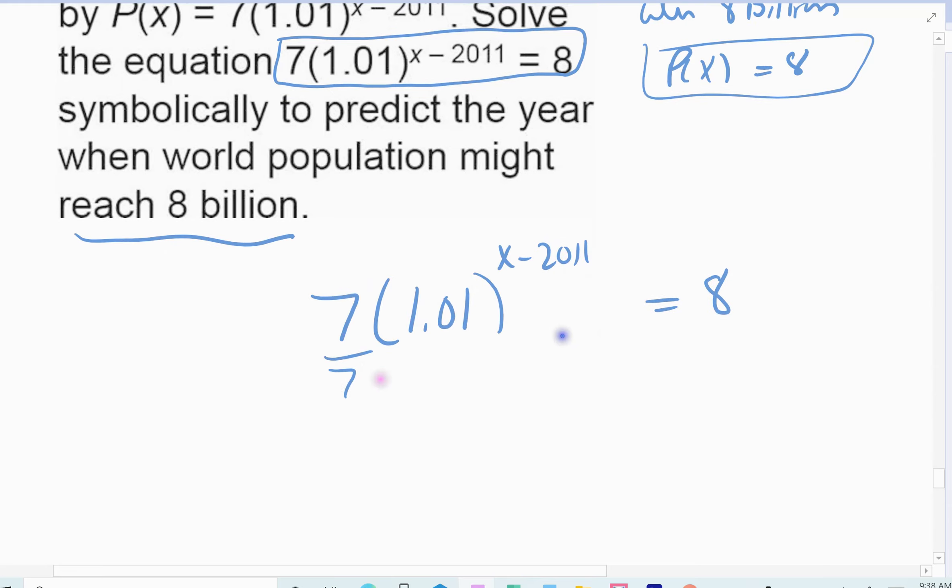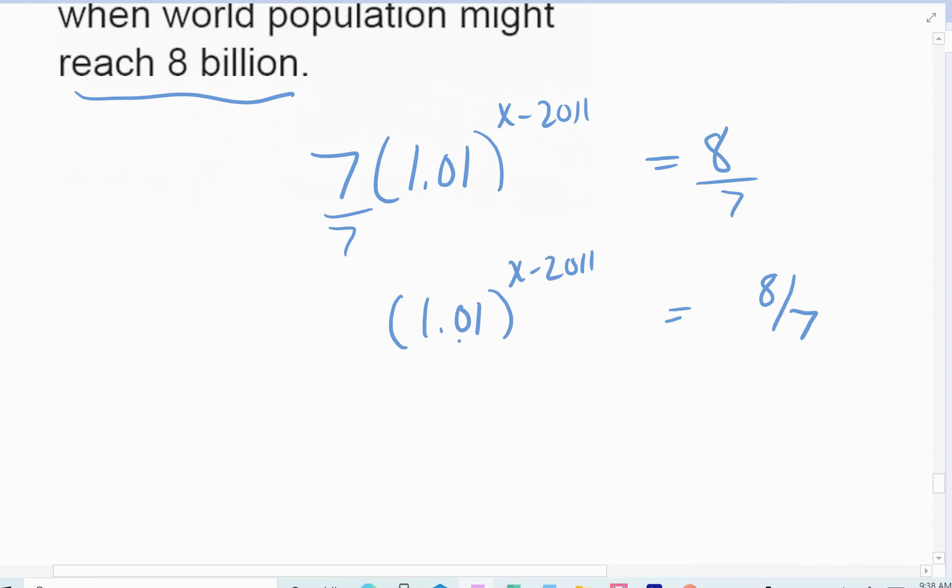So first thing, divide out by the 7. So I'm left with 1.01 raised to the x minus 2011 equals 8/7. So this one's going to be ugly. So I'm going to take the natural log of both sides because I've got to get that pulled out front. So I get (x minus 2011) times the natural log of 1.01 equals the natural log of 8/7.